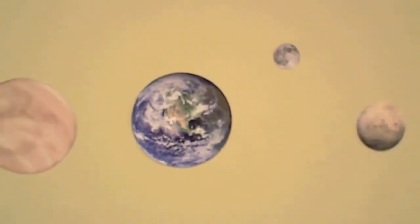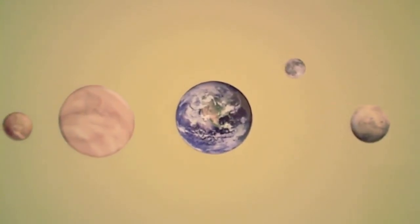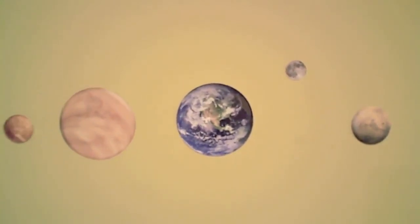Zooming out, we can see the other four terrestrial planets: Mercury on the far left, Venus which is about the size of Earth just a little bit smaller, and then Mars on the far right. This gives you a sense of how big Earth is compared to Mercury, Venus, and Mars, as well as the Moon.